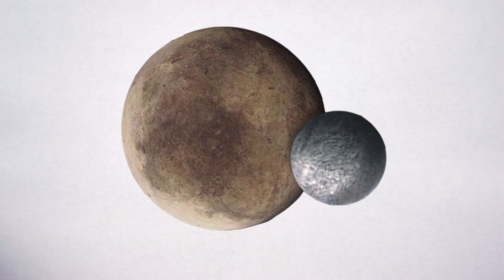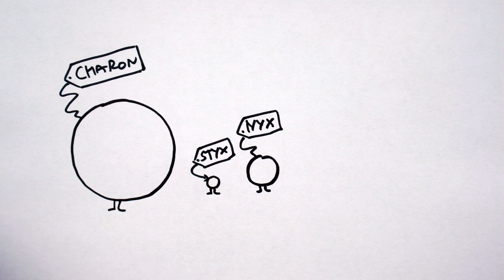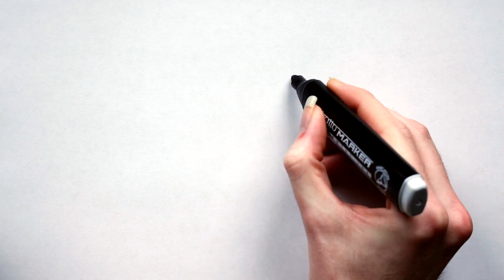Pluto, the second dwarf planet, on the other hand, does have a moon. Well, five actually: Charon, Styx, Nyx, Kerberos, and Hydra. But Charon, the largest at just over half the size of Pluto, makes the Pluto-Charon system a sort of double planet system. I mean, double dwarf planet system.